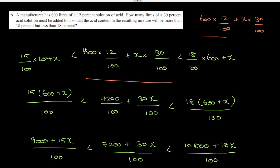So 600 litres of 12% acid plus x litres of 30% acid solution. The resulting mixture will be more than 15% but less than 18% acid.